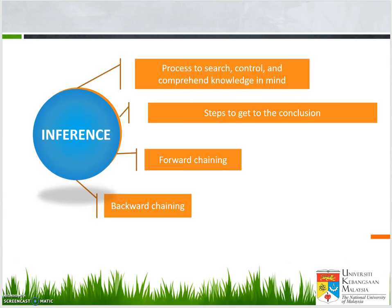So what is inference? Inference is actually a process to search, control and comprehend knowledge in mind. Basically when we try to remember something or conclude or decide something, our brain is very fast and we cannot note what steps are taken. This is a process that our brain performs while trying to decide on something — steps to get to the conclusion. There are two main methods: forward chaining and backward chaining.